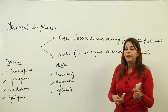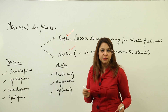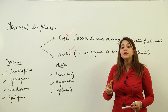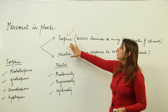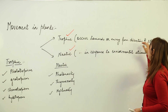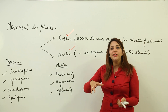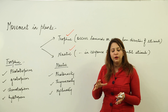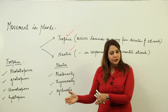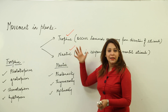Basically, two movements are shown by plants: tropic movements and nastic movements. Tropic movements are those which occur towards or away from the direction of the stimulus. This kind of movement is fixed — it is either towards the direction of the stimulus or away from it.